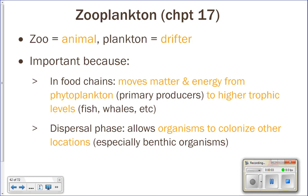Last cycle we talked about phytoplankton and how they need two things to survive: light and nutrients, because they do photosynthesis. Light is located in the photic zone at the top of the ocean, and nutrients are mostly below the thermocline. Because of this separation, phytoplankton rely on things like upwelling and breakdown of the thermocline to bring new nutrients up. We also looked at phytoplankton and zooplankton under the microscope in lab.